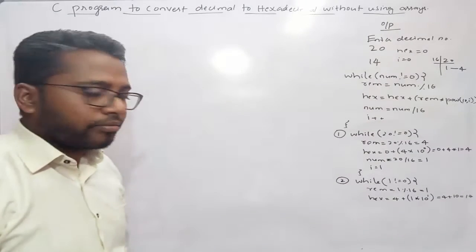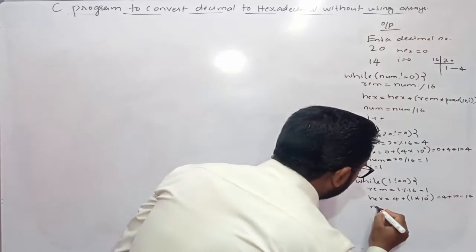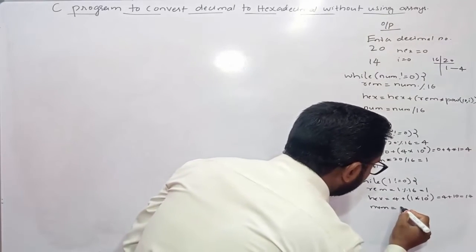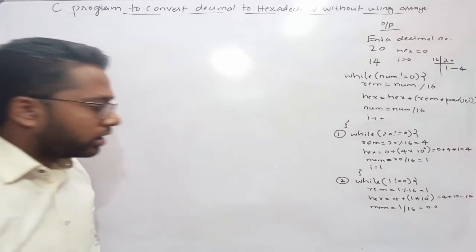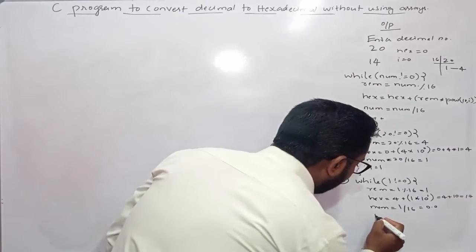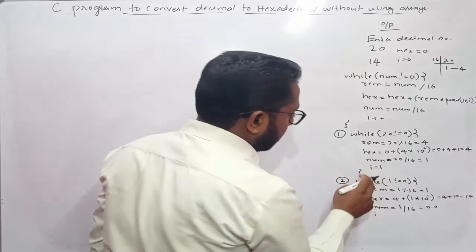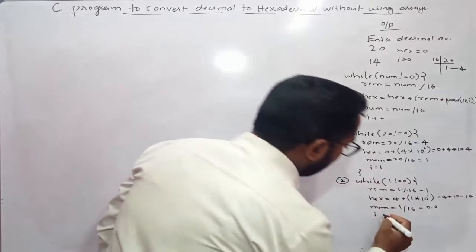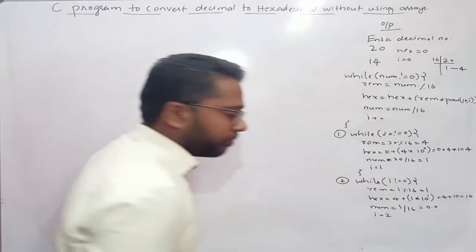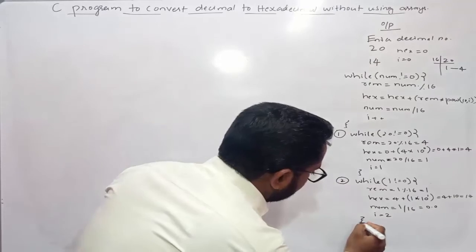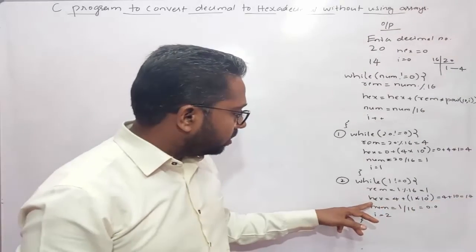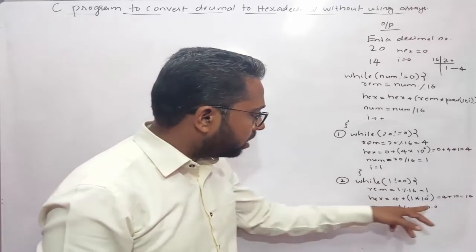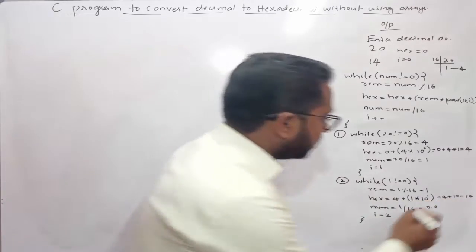Then num equals num is 1 by 16, you get 0.0 something. Then i value gets incremented by 1, earlier i was 1 so now i becomes 2. After the second iteration we have 14 stored inside hex and num becomes 0.